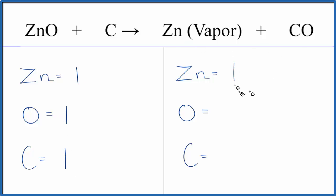On the product side, we have one zinc, one oxygen, and one carbon. And actually this equation, it's already balanced.